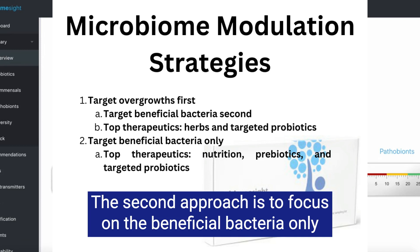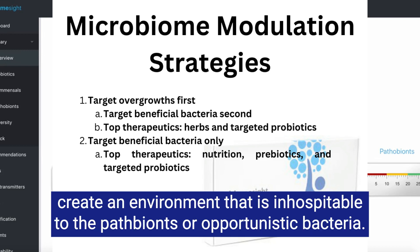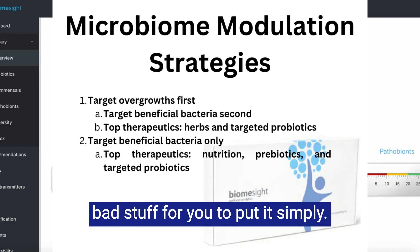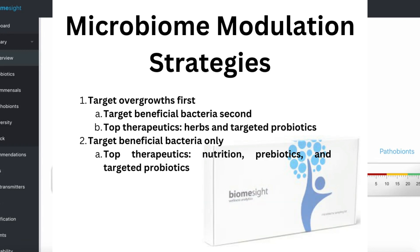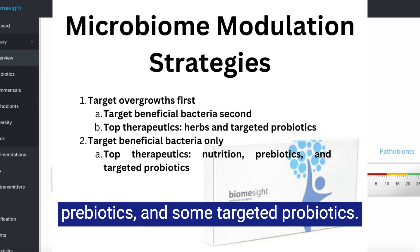The second approach is to focus on the beneficial bacteria only, even if you have overgrowth. The idea here is that when the beneficial bacteria are healthy and supported, they create an environment that is inhospitable to the pathobionts or opportunistic bacteria. So by supporting the good stuff, the good stuff will take care of the bad stuff for you. The tools for the second approach will be nutrition, prebiotics, and some targeted probiotics.